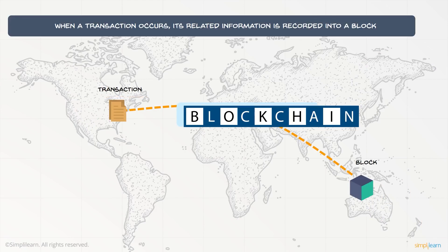Now when a transaction occurs, its related information is recorded into a block. A transaction initiated in one corner of the globe can get registered on the block, and then that block is verified and validated by the miners of the public ledger and then added to the main blockchain.